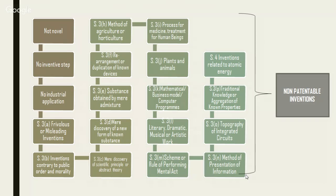Section 4 also says that inventions related to atomic energy are non-patentable, in favour of the country. The procedure to obtain a patent grant involves drafting and filing — either provisional or complete specification. A provisional filing gives 12 months to file a complete application. After 18 months from the date of filing, the application is published in the public domain and is open for pre-grant opposition.